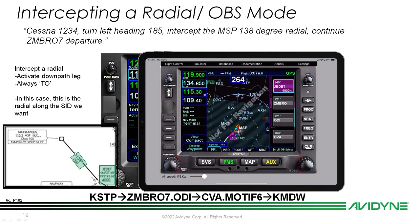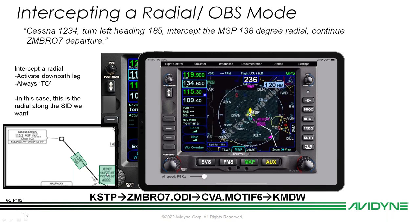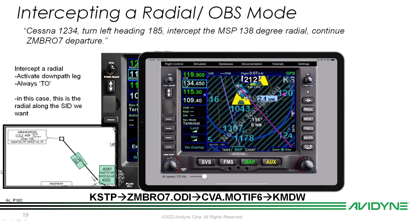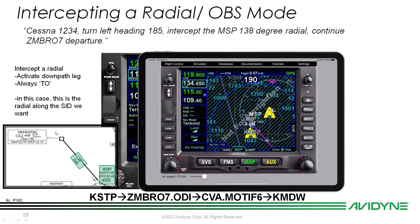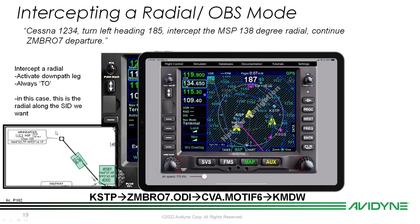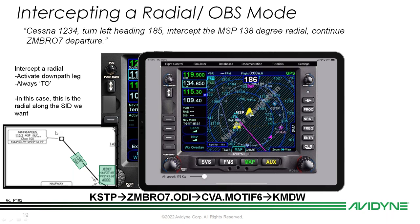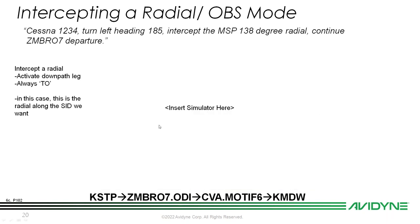This activates the leg from MSP to Jettit, which lies along that radial. On the map in north-up view, I can see the IFD is now intercepting that radial. In the actual aircraft you'd be flying heading 185, and once you intercept the radial you'd put the autopilot back in GPSS mode and continue along the departure.